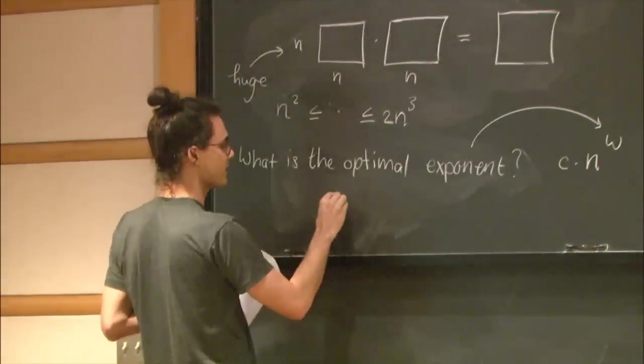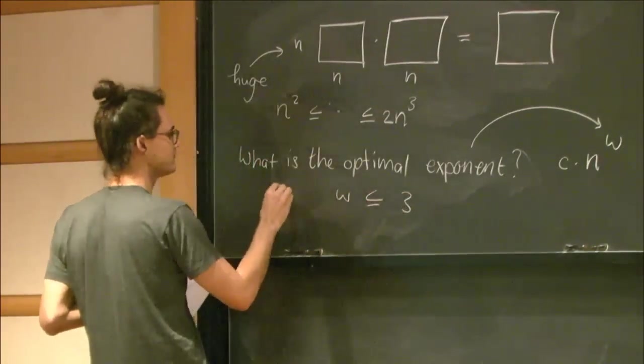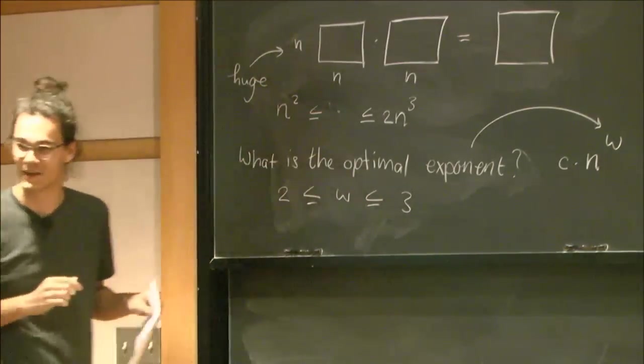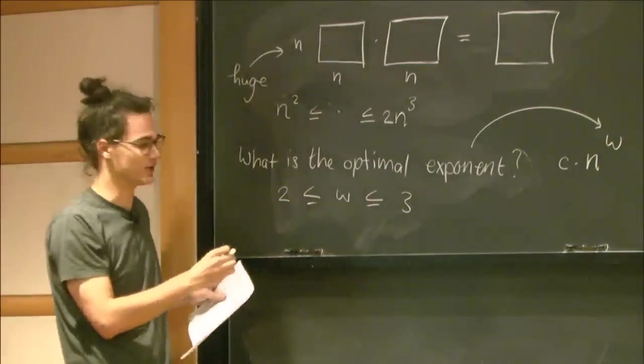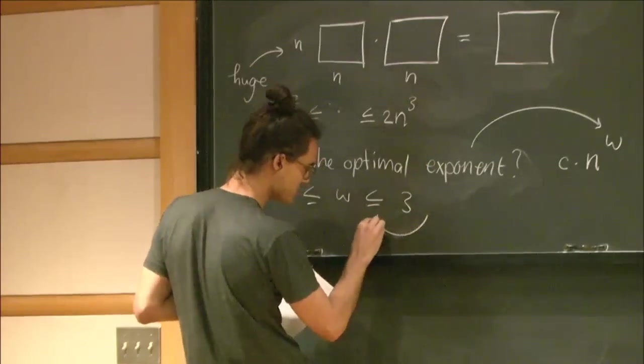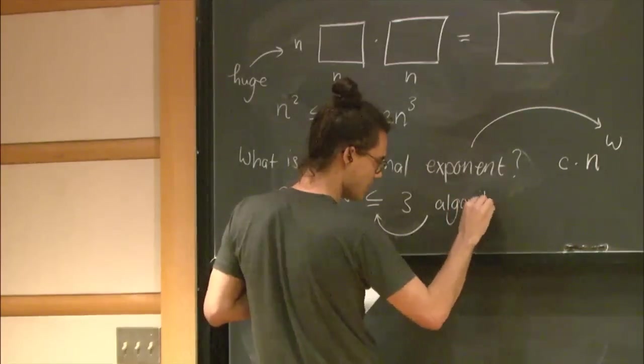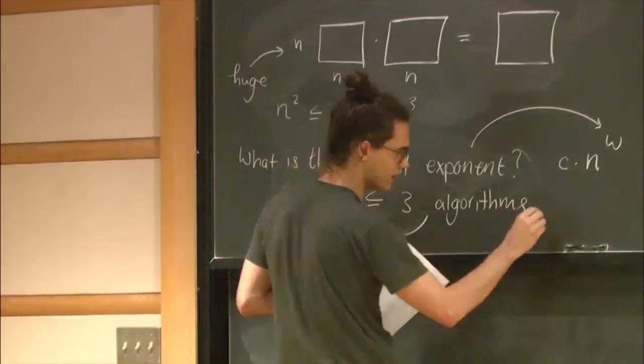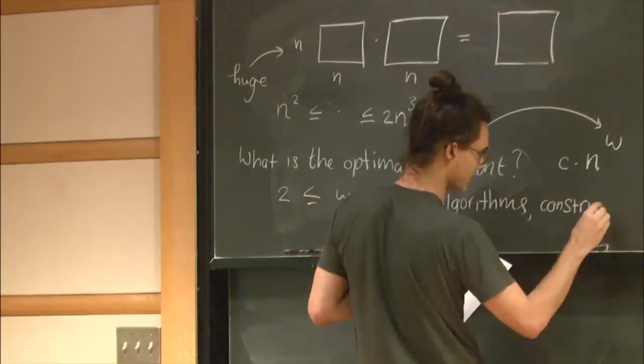So omega is between three and two by this reasoning. And so what should we do? We should come up with better upper bounds. So what does it mean? It means we should find algorithms. Upper bounds correspond to algorithms. Or another nice word for this is construction. So this is really a constructive thing somehow, constructions.